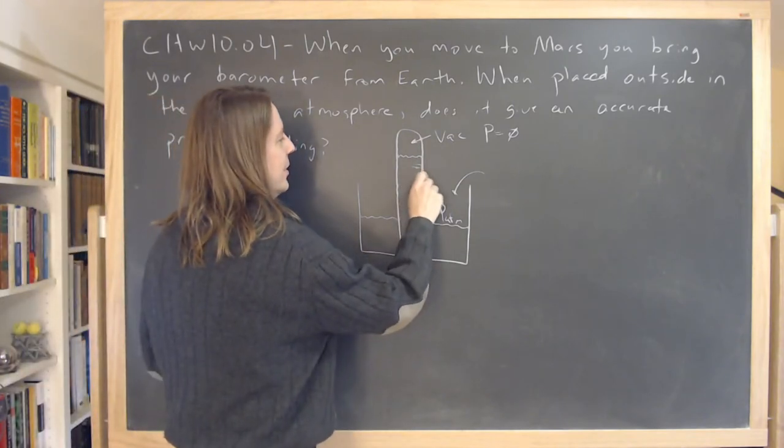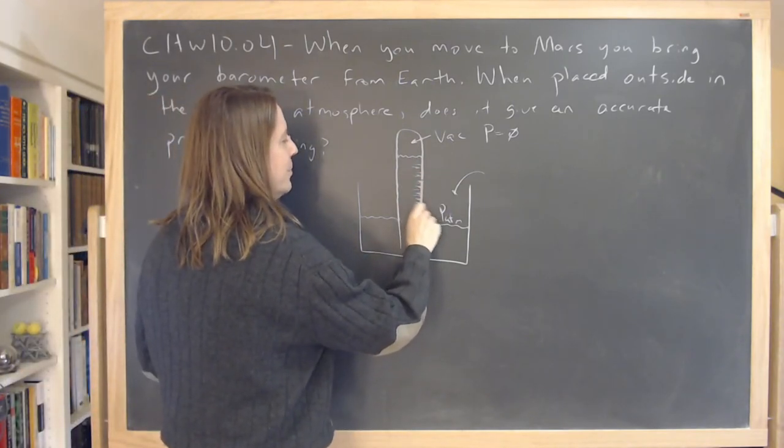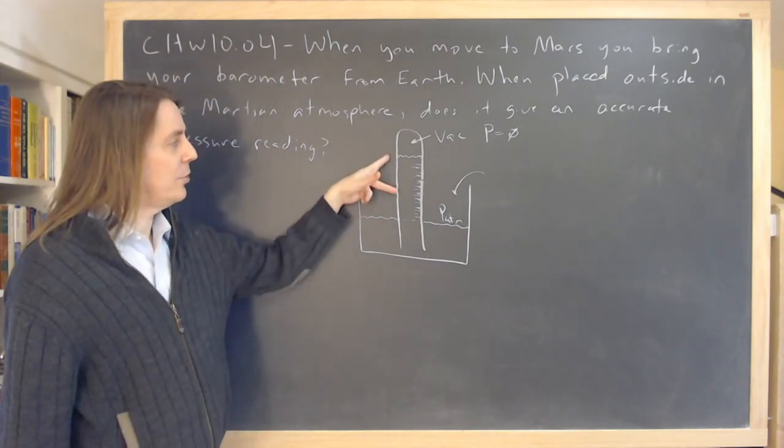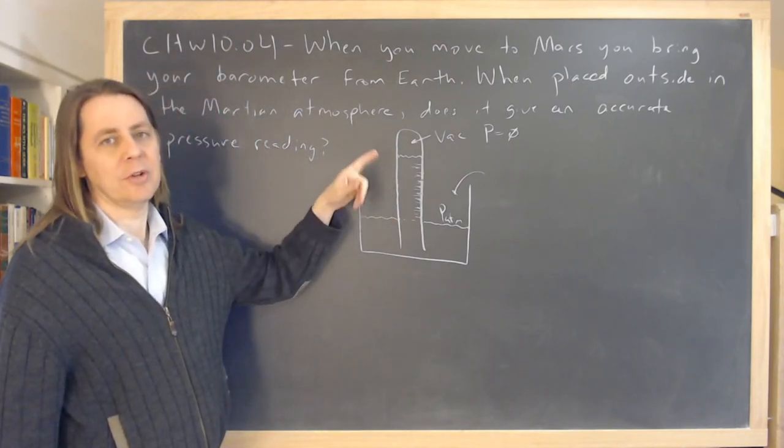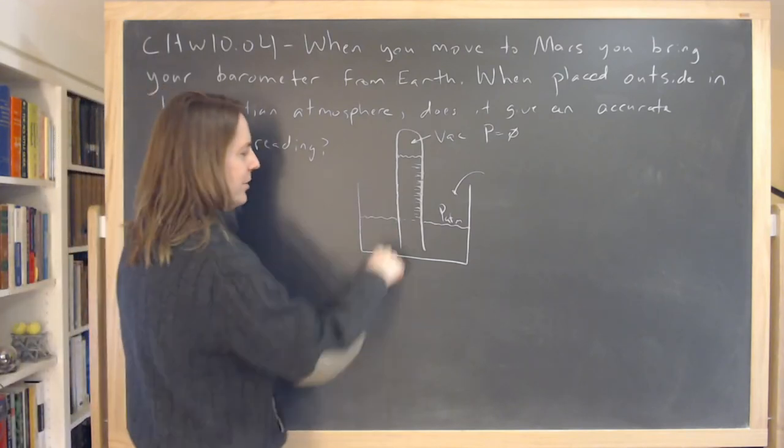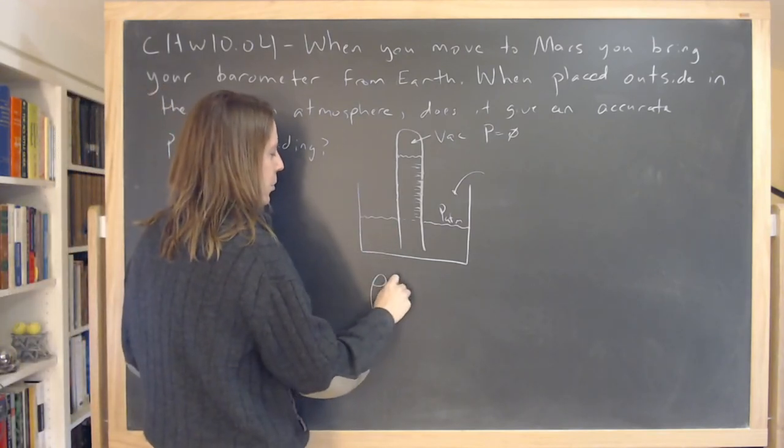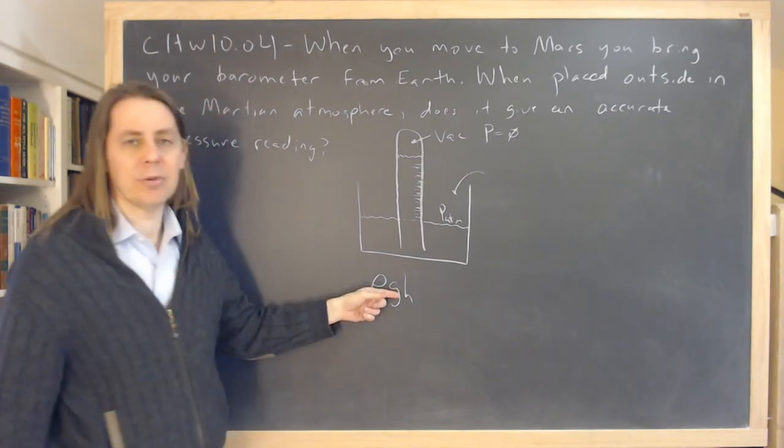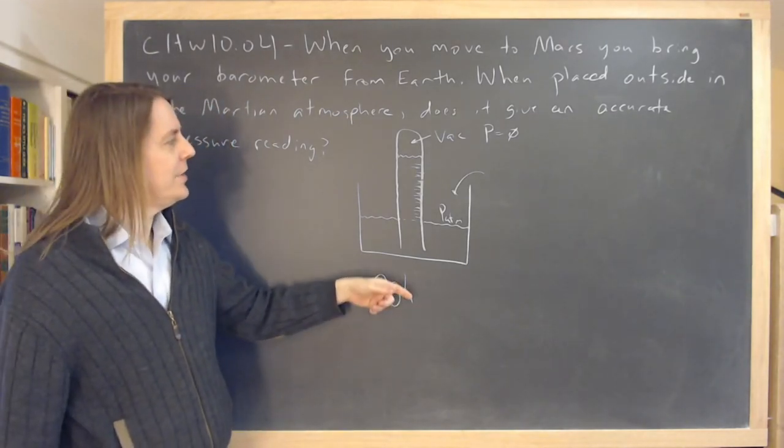the scale, which tells you the actual value of the pressure, was calibrated on the Earth and it's based on the weight of this column. So it's based on g, and the physics that goes in there is ρgh. And that g would be for Earth 9.8 meters per second squared. If you take it to